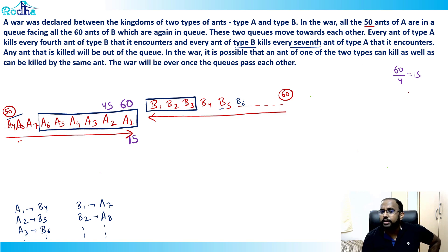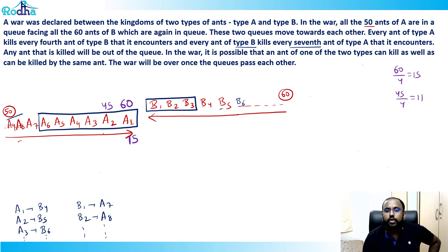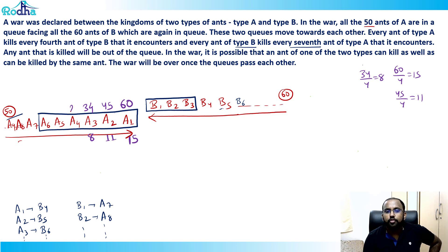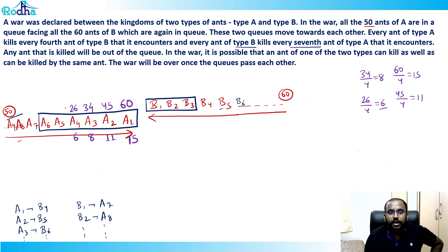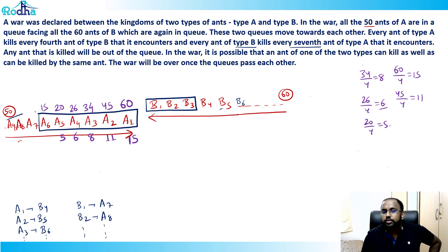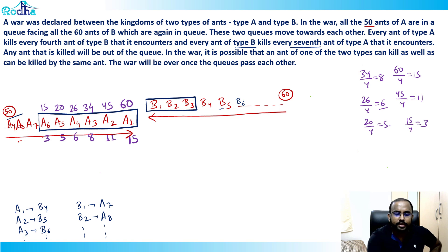For a2: 45 ÷ 4 = 11, so a2 kills 11, leaving 34. For a3: 34 ÷ 4 = 8, leaving 26. For a4: 26 ÷ 4 = 6, leaving 20. For a5: 20 ÷ 4 = 5, leaving 15. For a6: 15 ÷ 4 = 3, so a6 kills 3 ants.